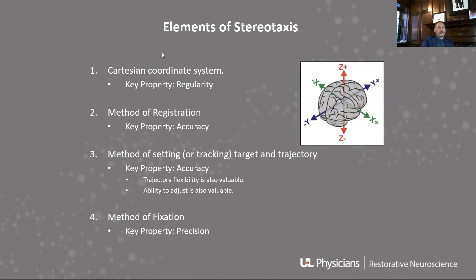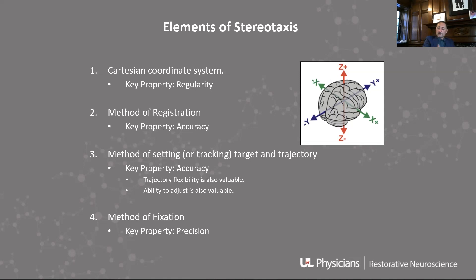The key properties are that you need to have a Cartesian coordinate system defined. It can be defined by the frame itself — if you drop a Leksell frame on the head, you can look at the bottom and count out that it has 200 millimeters on each side of the box placed on the head. It's also present in every CT and MRI obtained, which are volumetric scans — each point has its own XYZ coordinate. On some software, if you move the mouse around the scan, it will give you an XYZ coordinate in the upper corner.